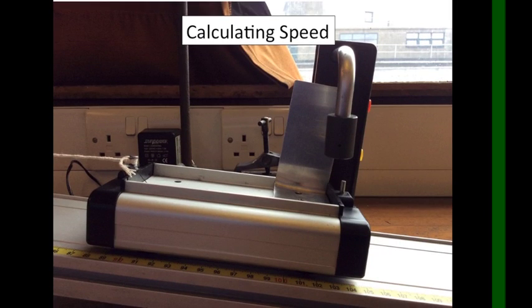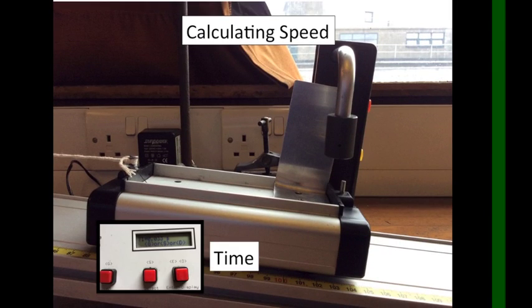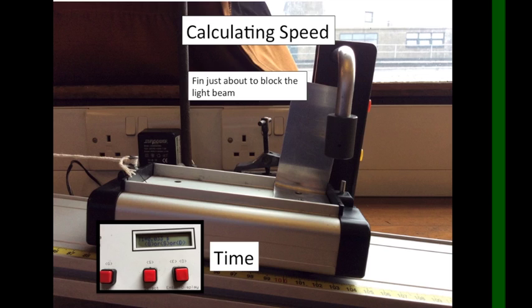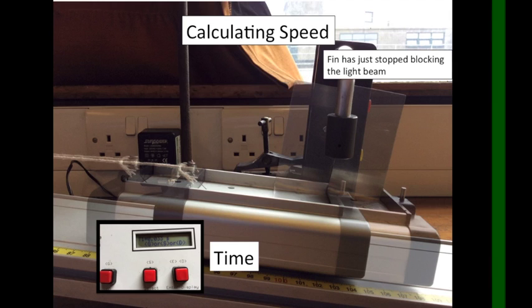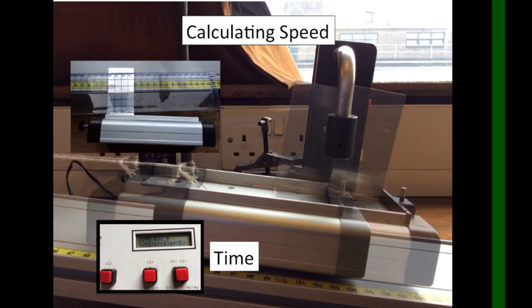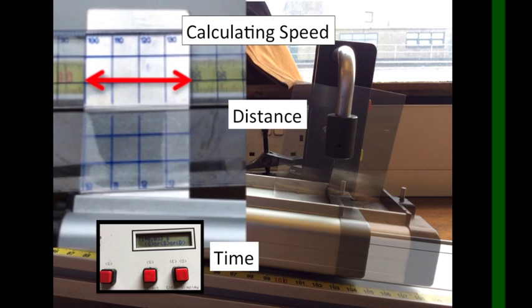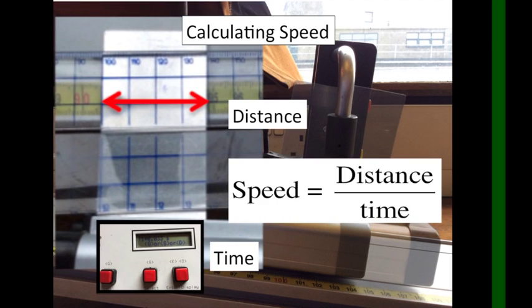We have the time it took the car to pass through the gate. To get the speed of the car, consider the distance it moved during that time. Shown here, you can see that the car moves the length of the car's fin. We can measure this with a ruler and then use the equation speed is distance over time to calculate the speed.